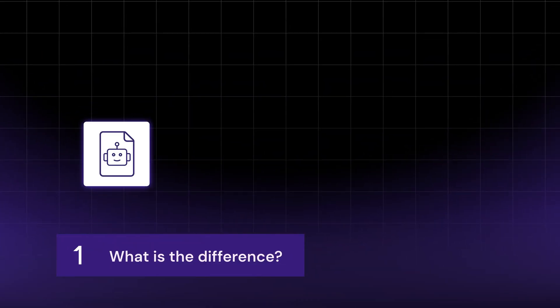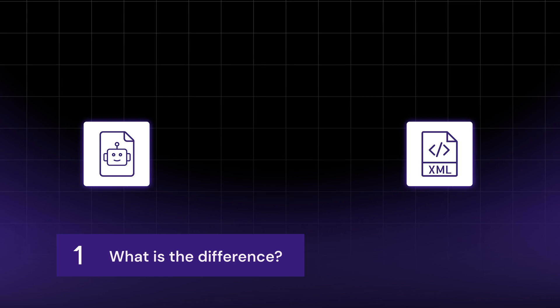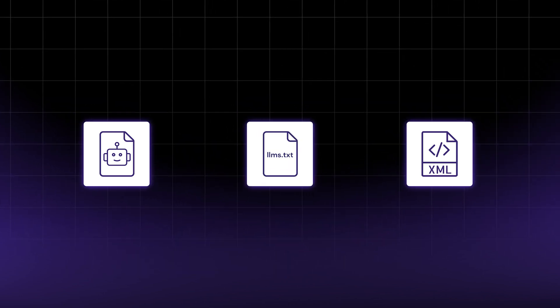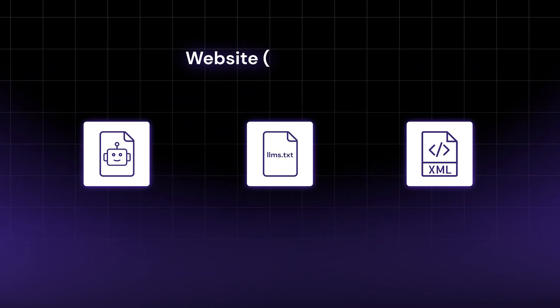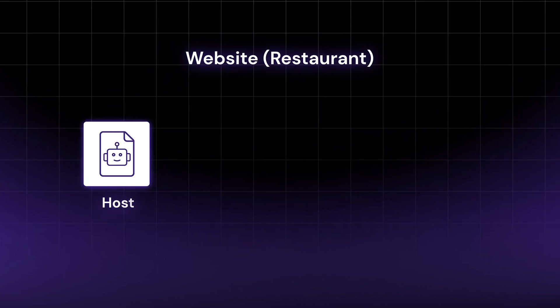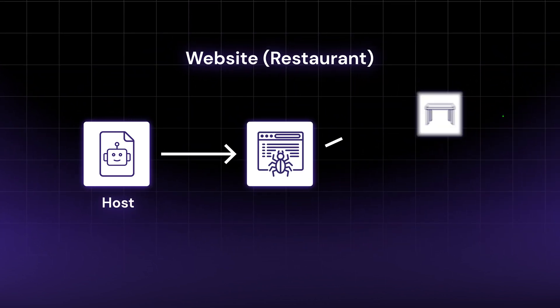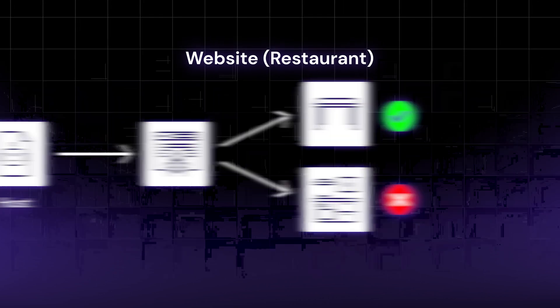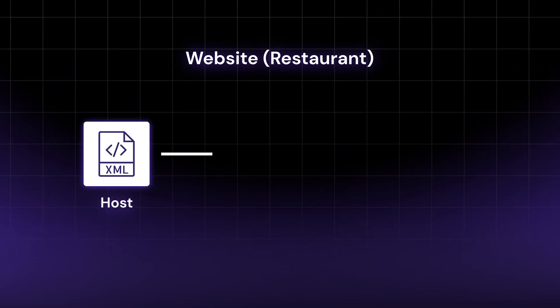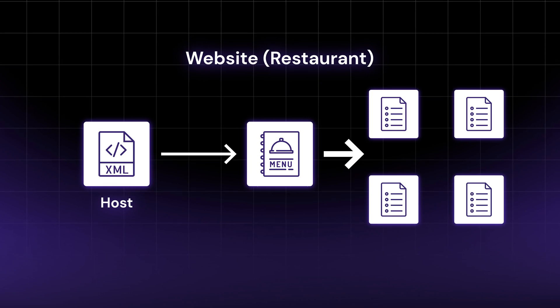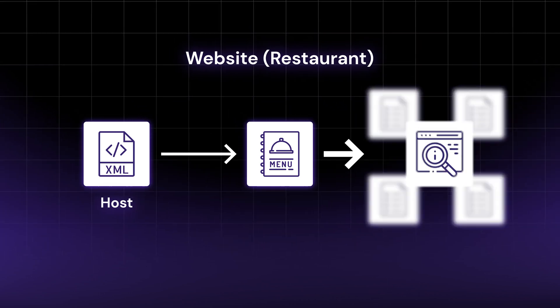You already have files like robots.txt and sitemap.xml working for you, but LLMs.txt does something different. To make this really simple, think of your website as a restaurant. Robots.txt is the host — it tells search engine crawlers which tables are open and which areas like the kitchen are private. Sitemap.xml is the full menu; it lists every single dish your website offers in a neatly organized way. But AI models can get overwhelmed by the full menu. This is where LLMs.txt comes in — it's the Chef Specials insert, highlighting the most important items you really want the AI to pay attention to.